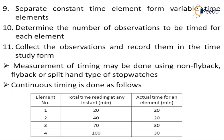For continuous timing, for example if a job is divided into four elements, the cumulative stopwatch readings are 20, 40, 70 and 100. The stopwatch runs continuously. At the end of the first element the reading is 20, second element is 40, third is 70, fourth is 100. For individual element times: 40 minus 20 is 20, 70 minus 40 is 30, and so on. This is how we calculate the time for each element when using the stopwatch continuously.